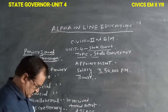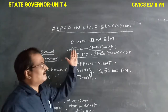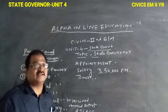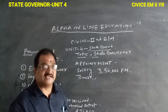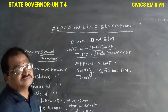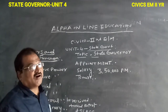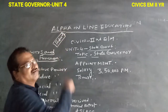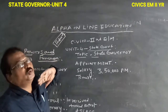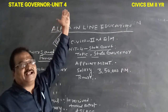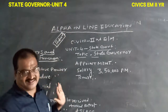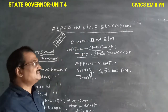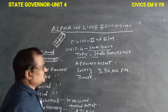Now in Unit Four we study the State Government. India follows a federal government system, which has two types of government: the Central Government and the State Government.